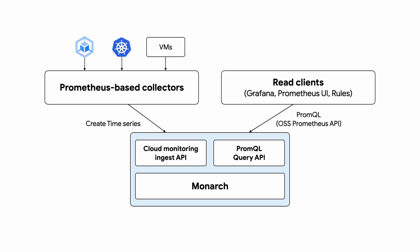Managed Service for Prometheus wraps Monarch with Prometheus-compatible APIs, both for writing and reading metrics. And because this is the same Monarch instance used by Cloud Monitoring, you can query over 1,500 Google Cloud system metrics using PromQL right alongside your Prometheus metrics.